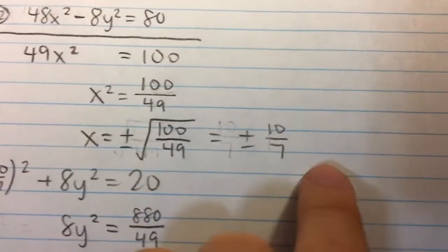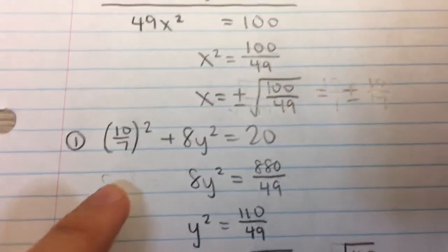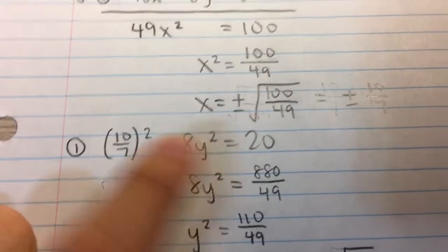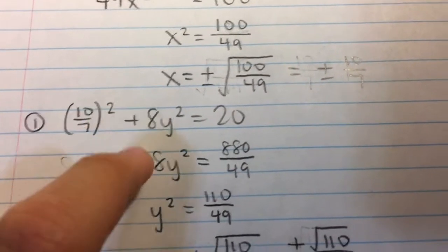And so to solve for y, we're going to plug this back into either one of the original equations. I chose the first one, plug it in for x, and then we can solve for y. So here, 20 minus 10 over 7 squared.